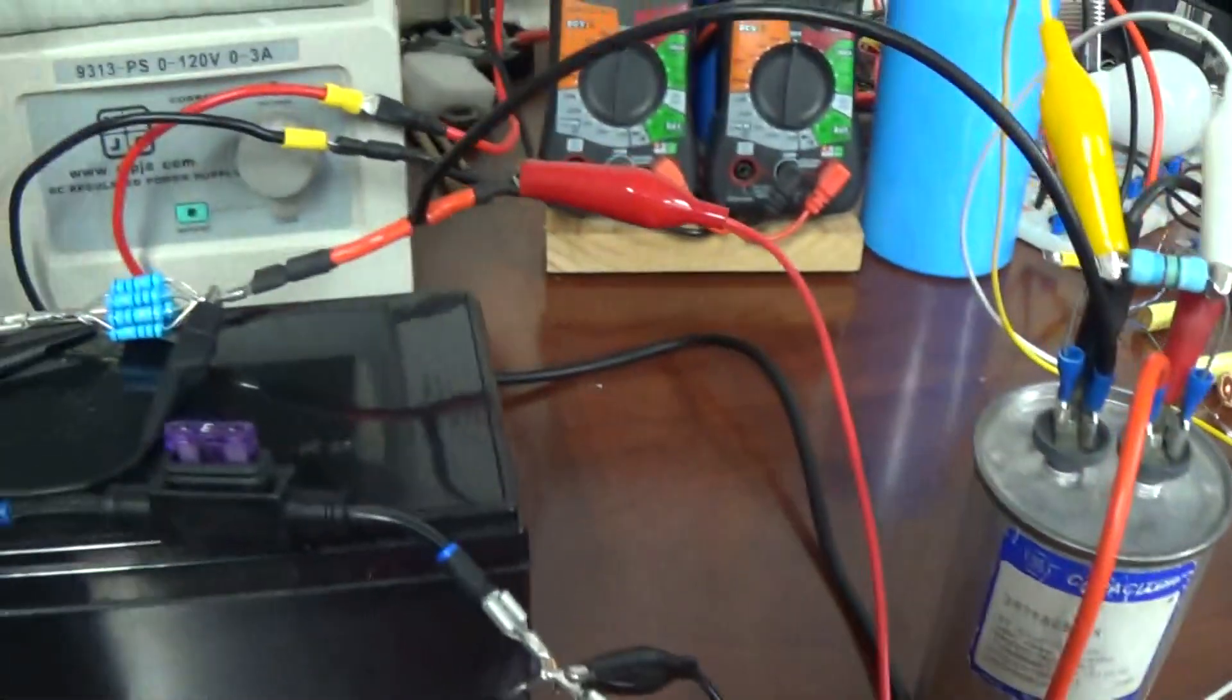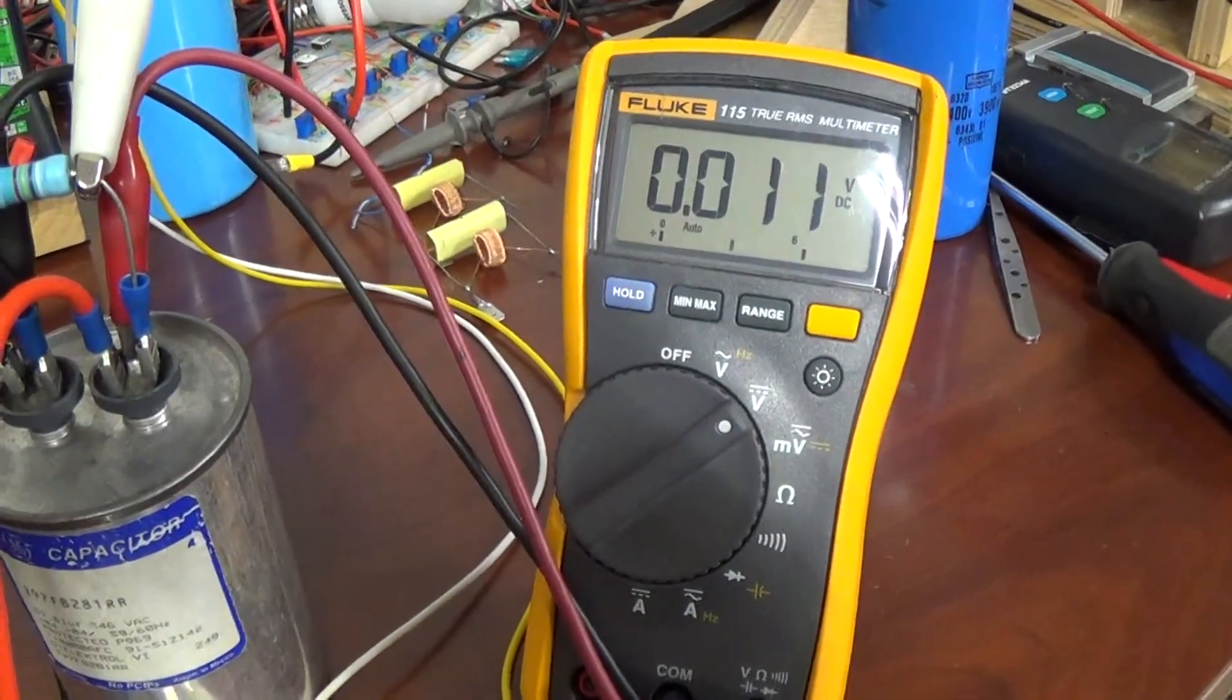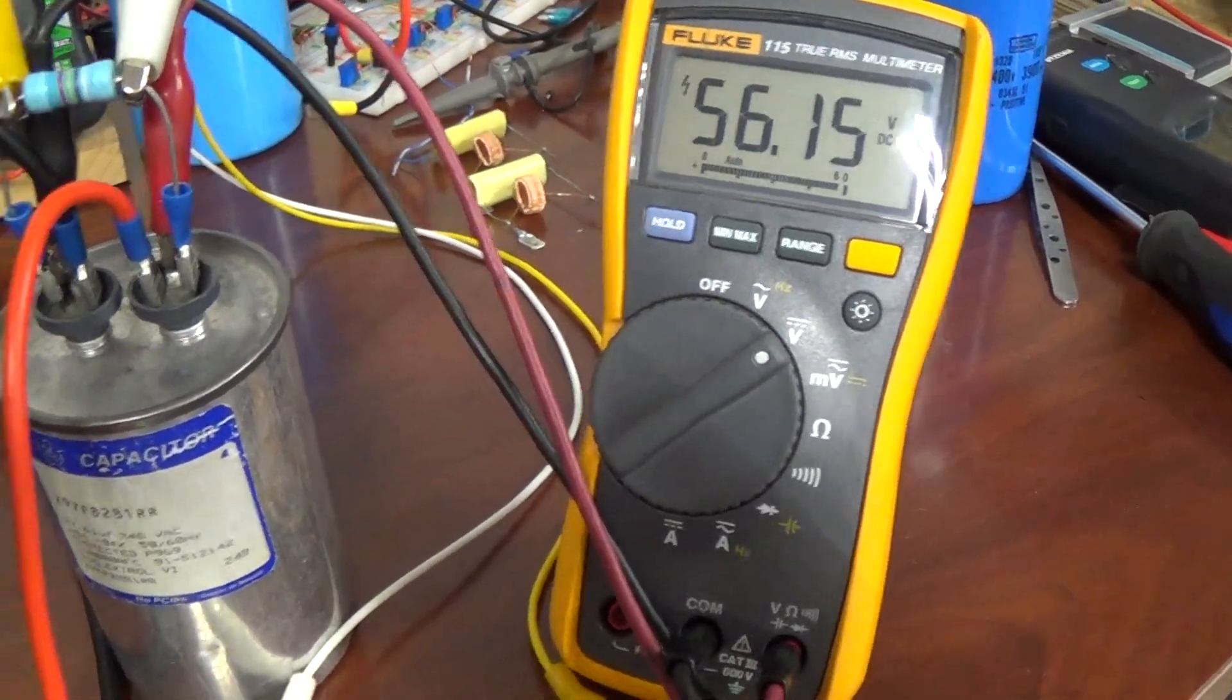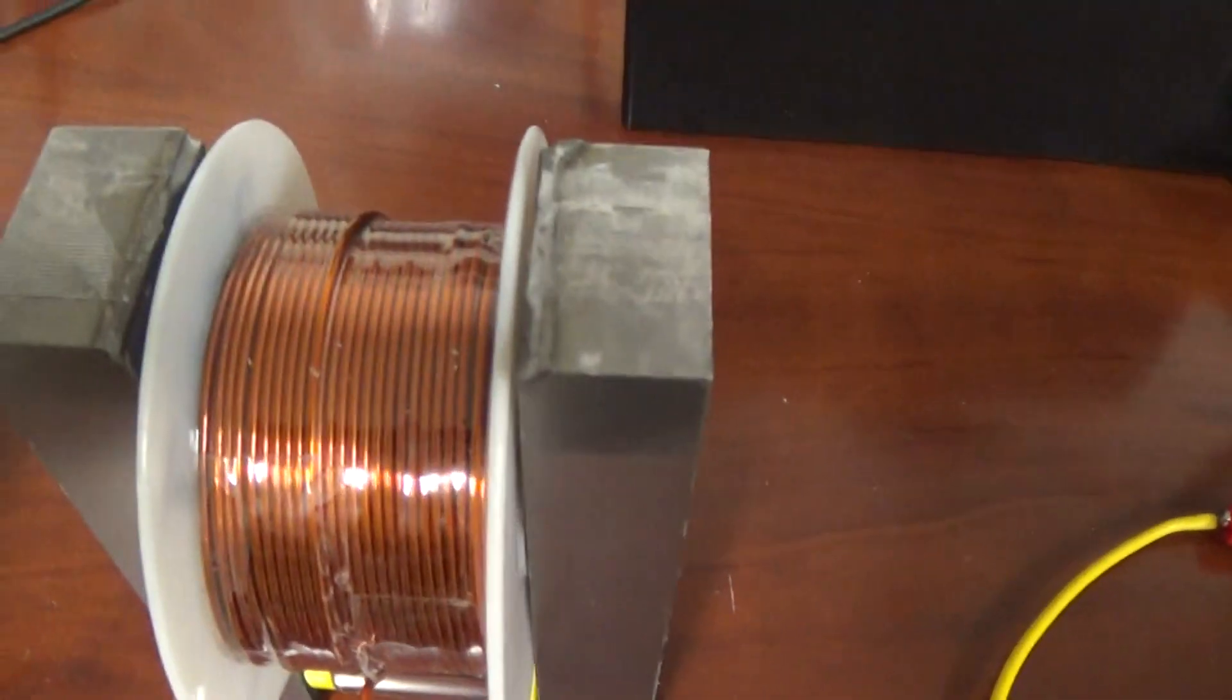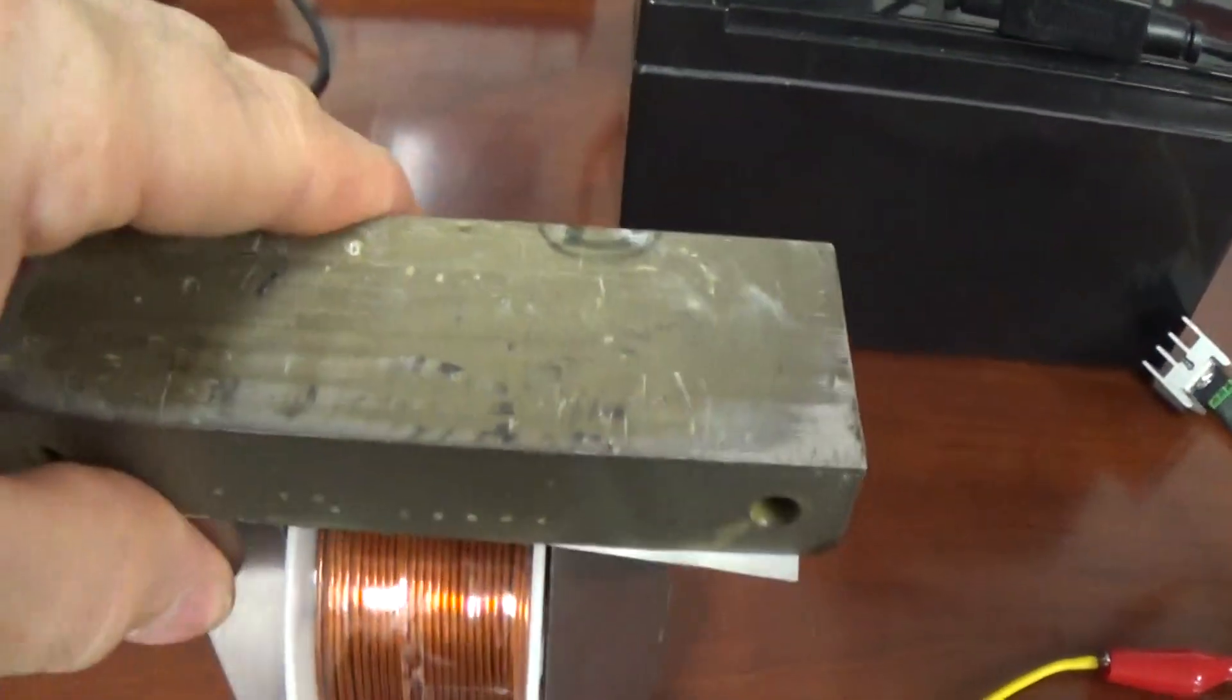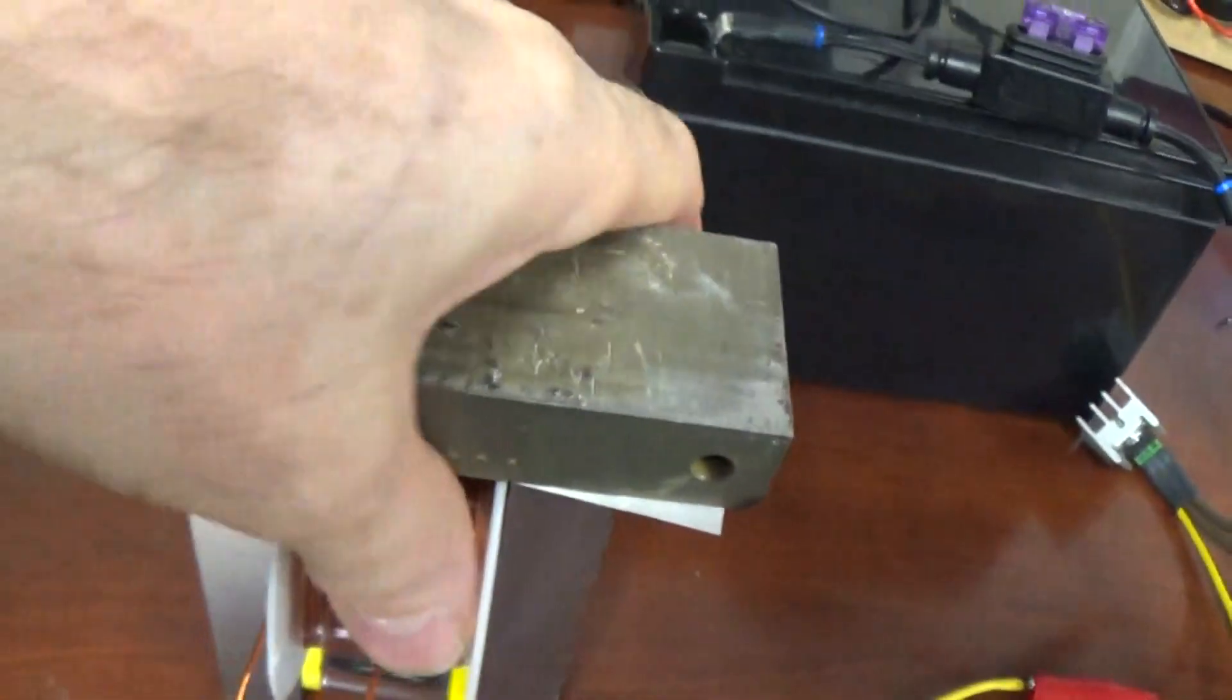And I'll go ahead and turn it on. So that was one pulse there. So that now should be magnetized, right? So if I bring my core over here, it's it... there you go. So it doesn't... there you go, it's able to take it off.